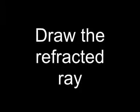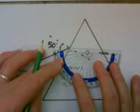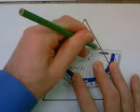Now draw in the refracted ray. Use a protractor to draw the refracted ray at 27.7 degrees to the normal. Continue the ray through the glass until it hits the boundary.